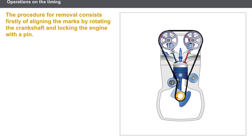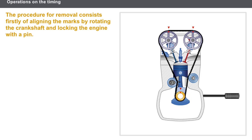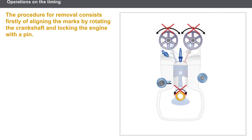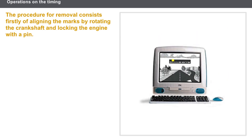Now let's take a look at the precautions to be observed when carrying out an operation on the valve timing. This procedure applies to all types of drive. The procedure for removal consists firstly of aligning the marks by rotating the crankshaft and locking the engine with a pin. The belt, chain, or sprockets must then be removed. After removing the drive, you must never turn the crankshaft nor the camshaft. It is essential that you refer to the technical documentation before removing the valve timing components.